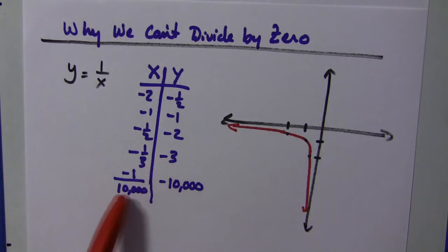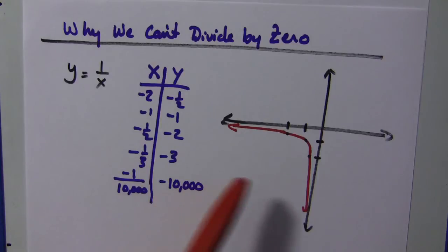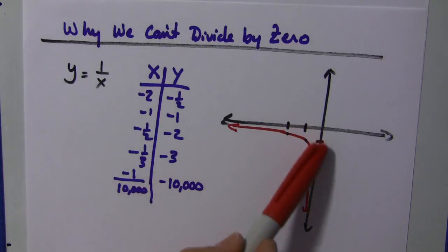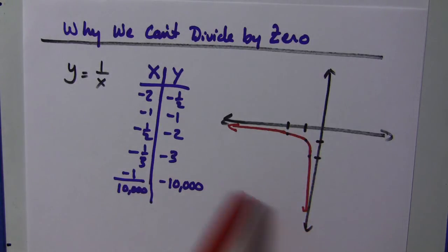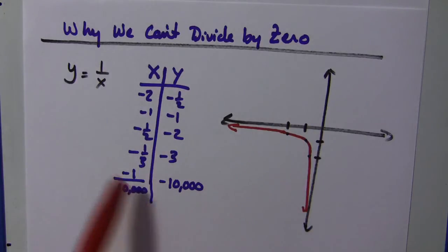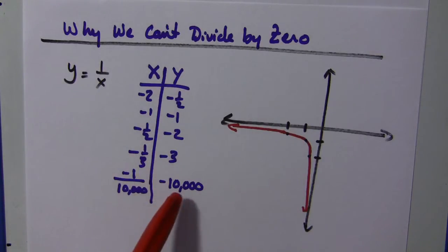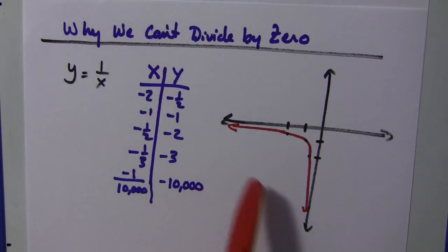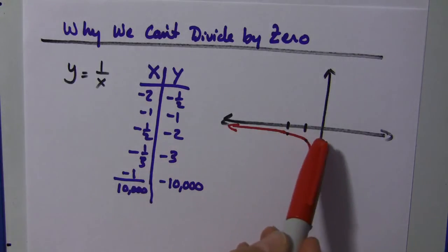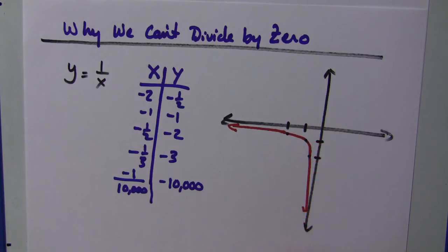And again, as the denominator becomes very large, or the fraction becomes closer and closer to zero from the left, we would get very large negative numbers. So, as x approaches zero from this side, from the left, we get what would look like negative infinity.